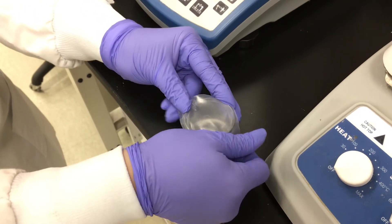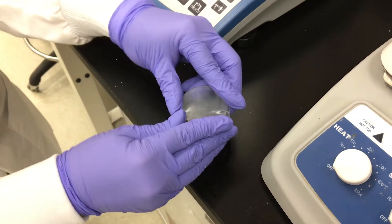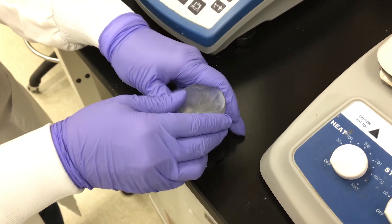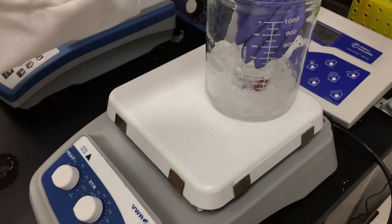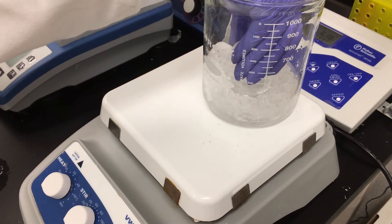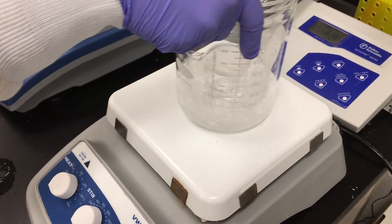Cover your solution and place it into an ice bath on a magnetic stirring plate. Gently stir the solution until the sodium borohydride is completely dissolved.